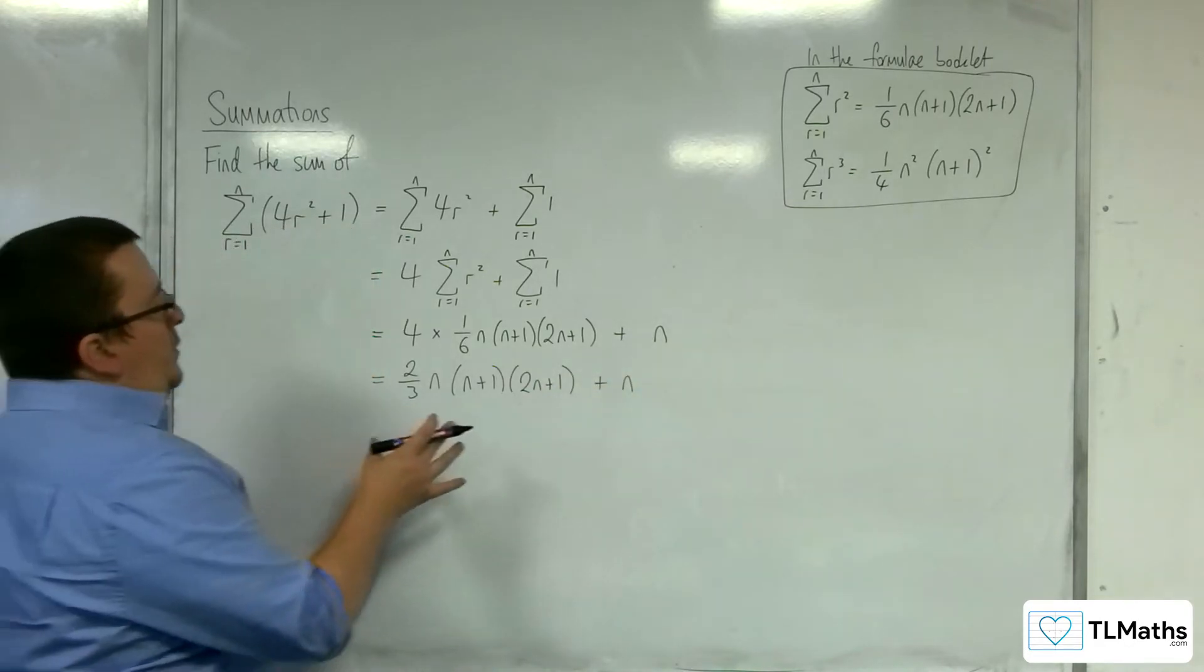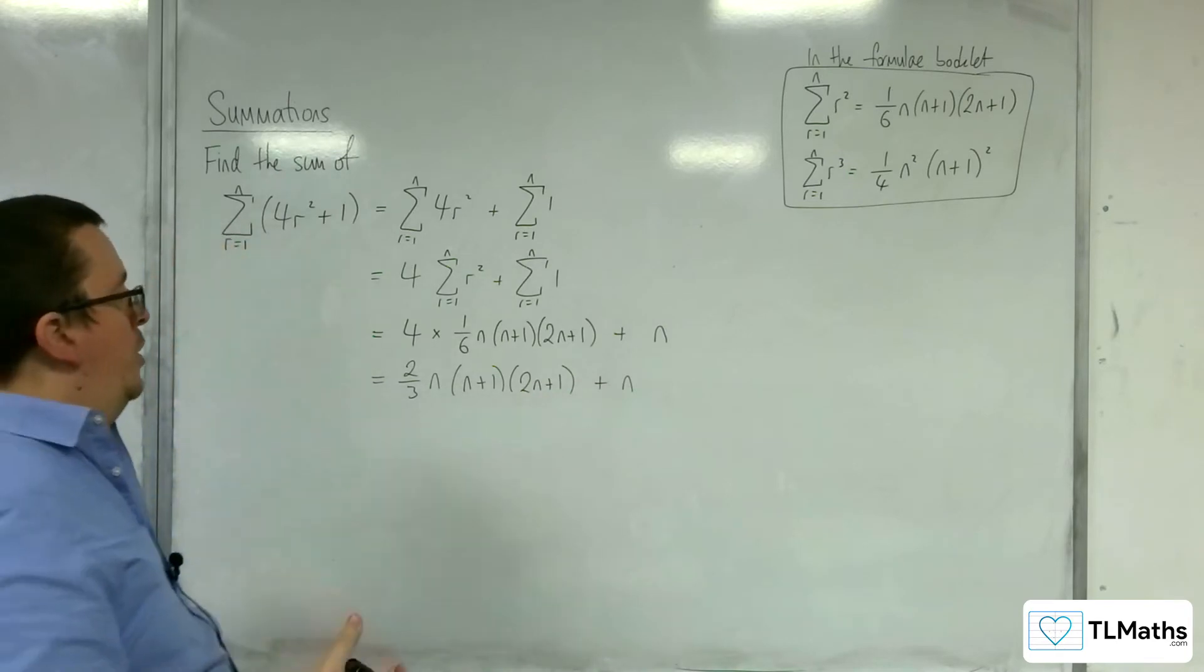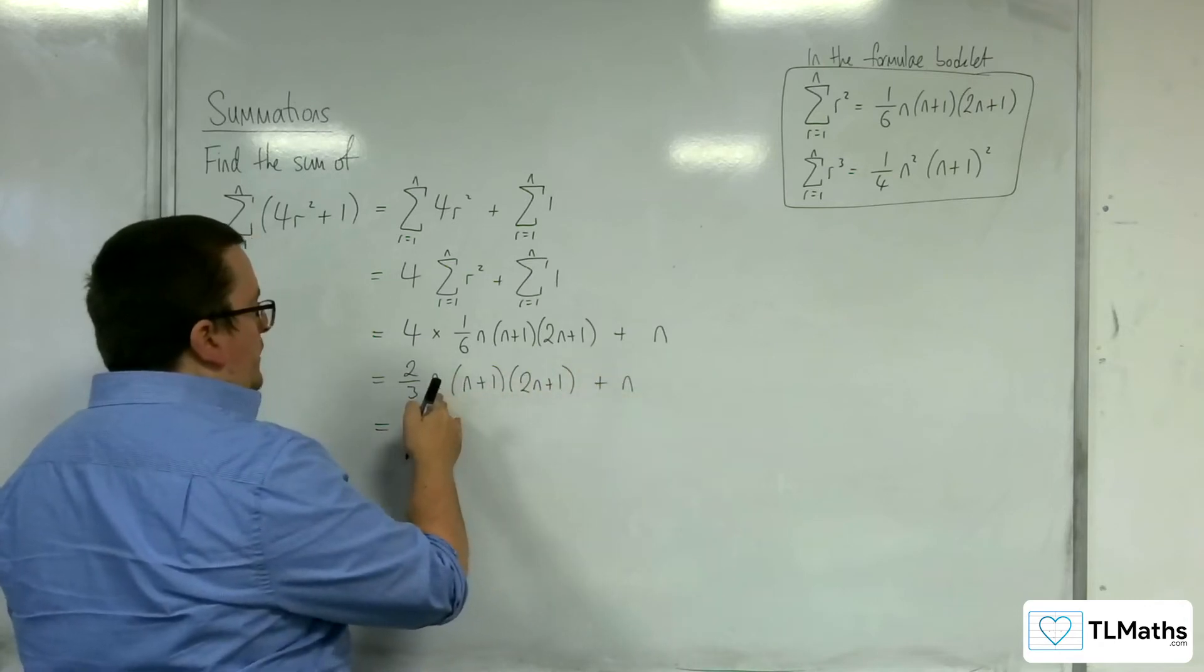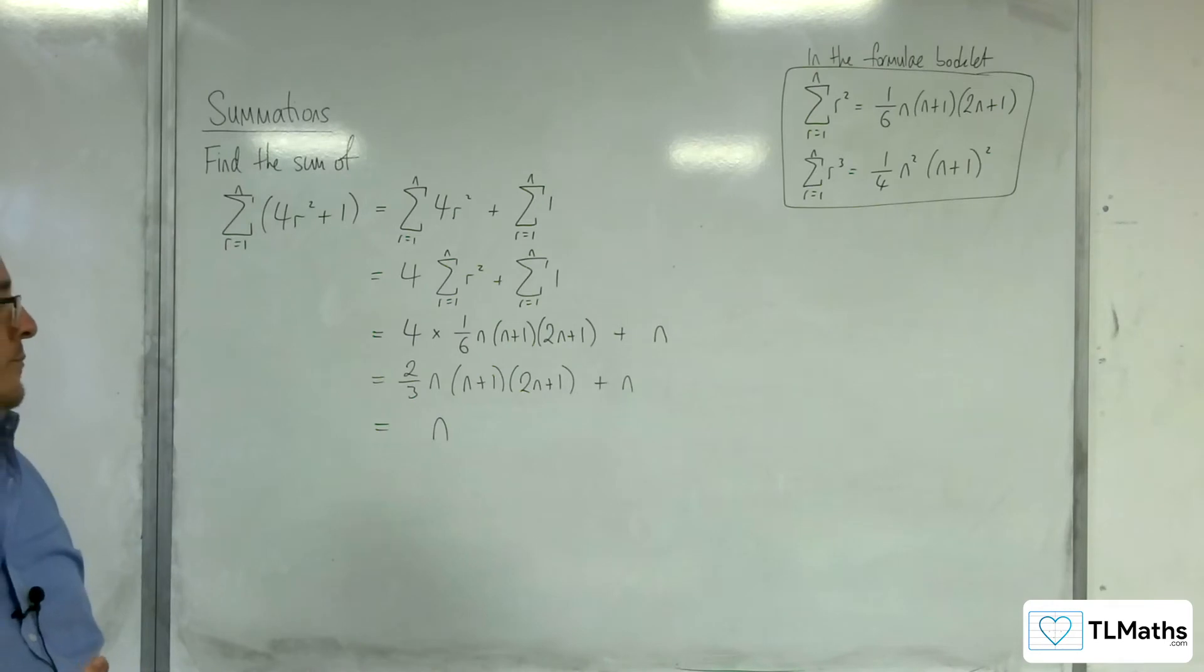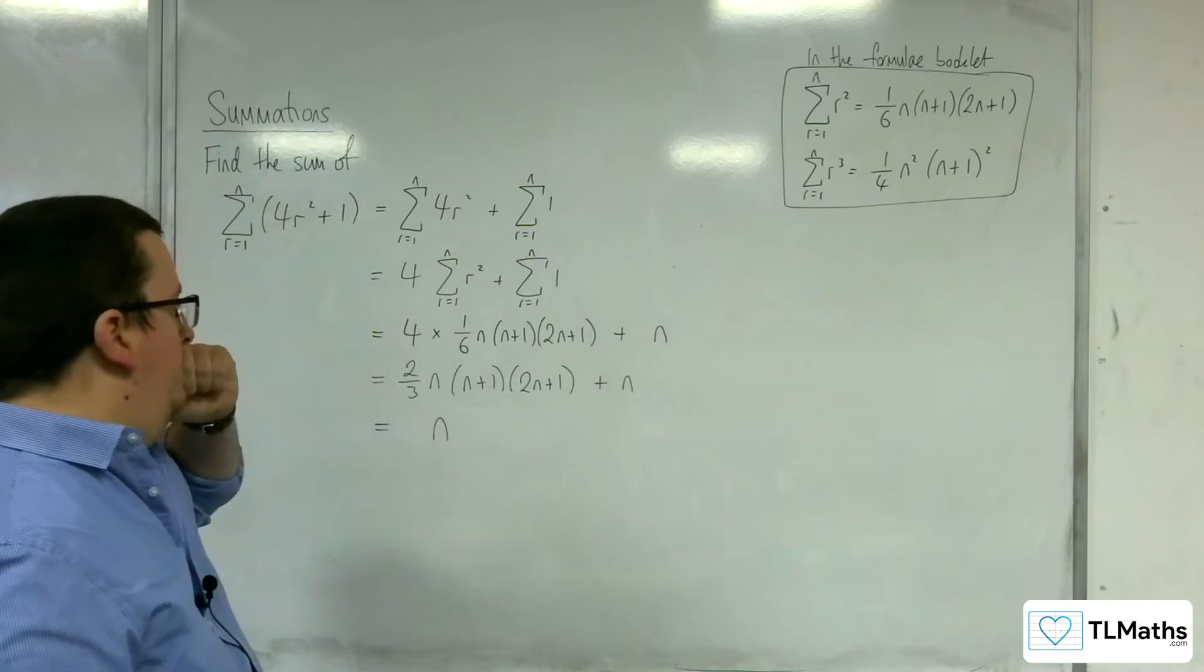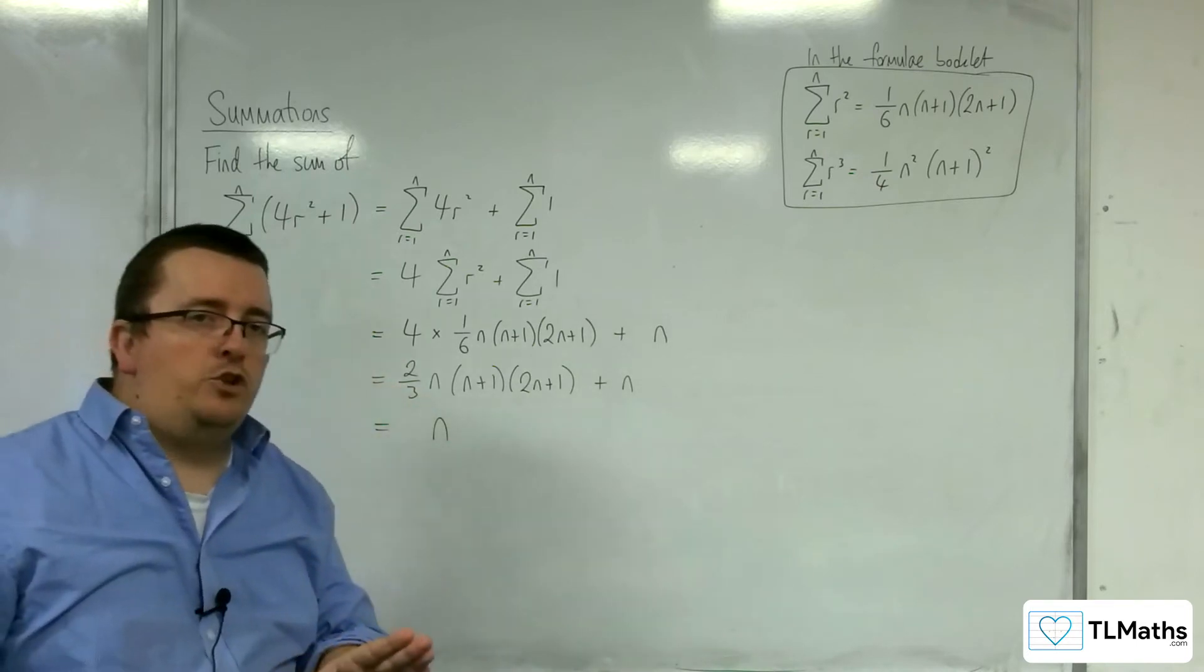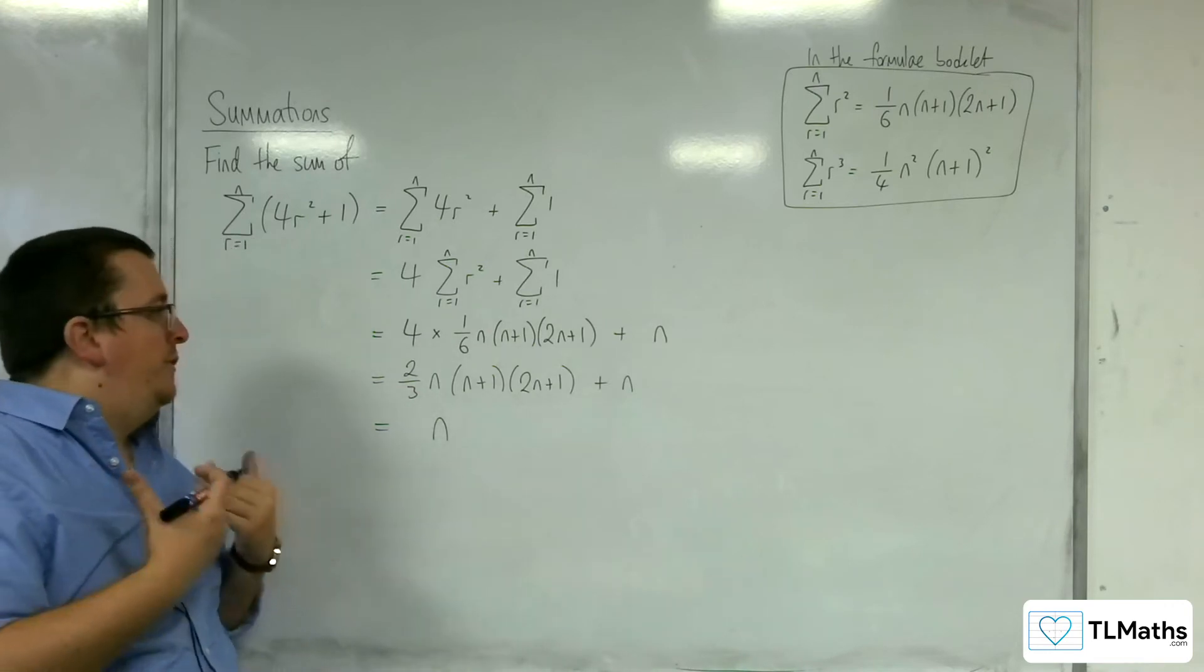So the next thing that we're going to do is we're going to look at these two terms and think, what do they both have in common? So they both have the n involved. So I know that n can be factored out of both terms. Now, the fact that there's this 2 thirds here, that causes a little bit of a problem because I don't particularly want to have fractions inside my bracket. So I want to see if I can factor any problem fractions out.